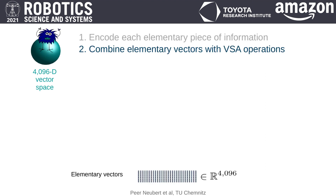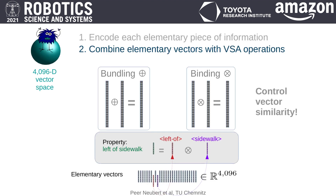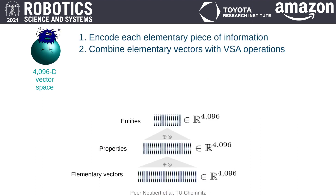Second, the huge capacity allows us to systematically combine multiple elementary vectors into a single vector of the same space. The key concept is to use carefully designed VSA operations — binding and bundling — to control the similarity between the input and output vectors of each combination. Controlling similarity is crucial when working with descriptors. In short, bundling creates similar vectors and binding creates non-similar vectors, but binding is similarity-preserving and approximately invertible. We can use this, for example, to encode the spatial relation 'left-of sidewalk' by binding the elementary vectors for each term. We can chain these operations to encode first elementary information, then properties, then semantic entities, and finally the whole image in a single vector of the same space.